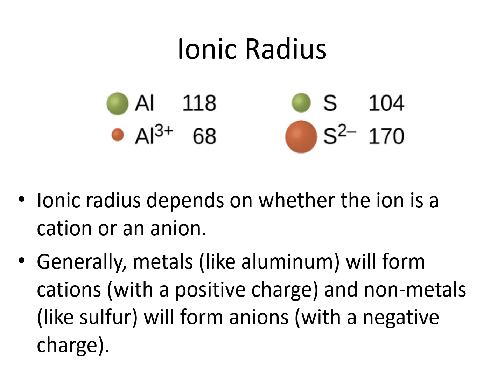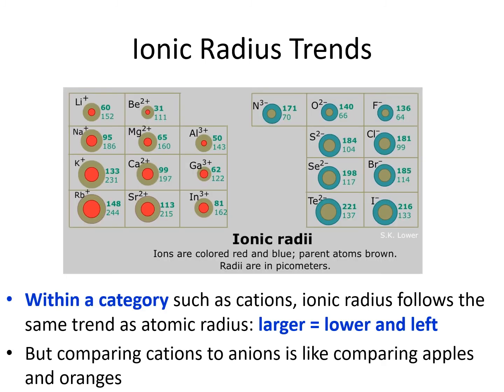For ions, it is going to be important to know if an ion is a cation or an anion. In general, metals, which are in the lower left part of the periodic table, will form cations. For example, aluminum is a metal and forms an ion with a plus 3 charge. Non-metals, which are in the upper right part of the periodic table, will form anions. For example, sulfur is a non-metal and forms an ion with a minus 2 charge. Within the category of cations or within the category of anions, the ionic radius follows the same trend as atomic radius: larger equals lower and left.